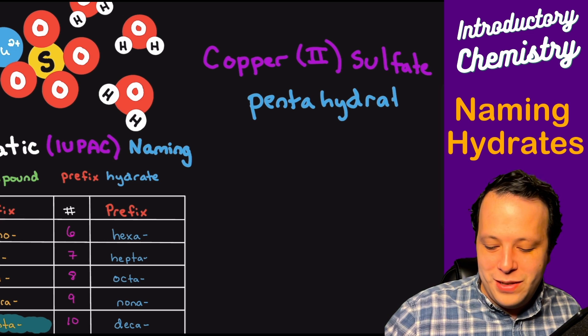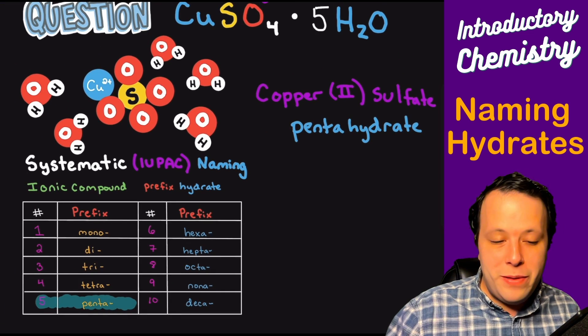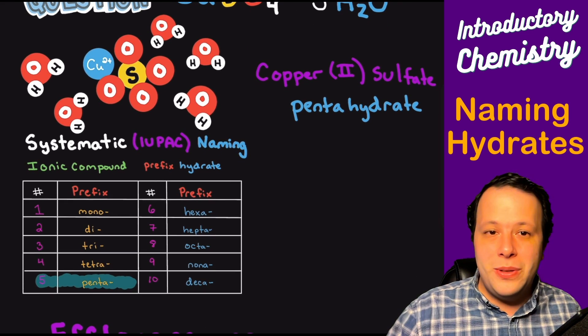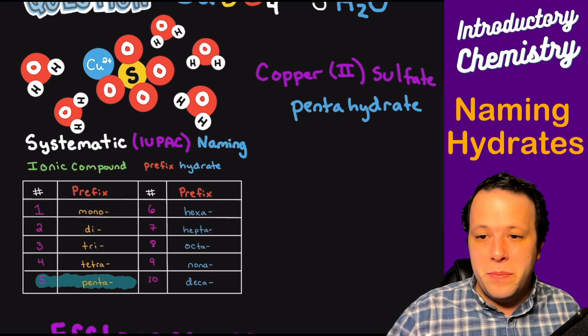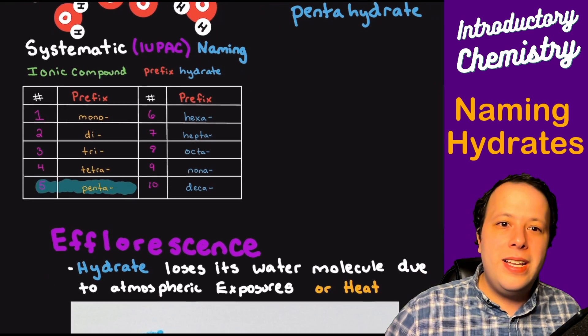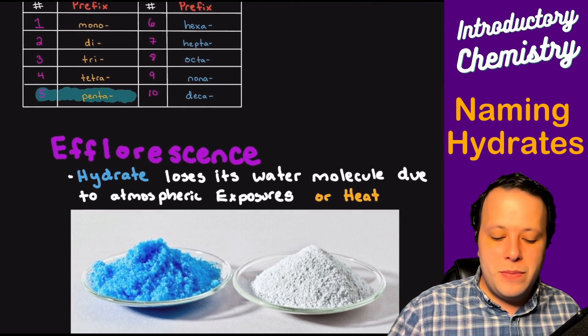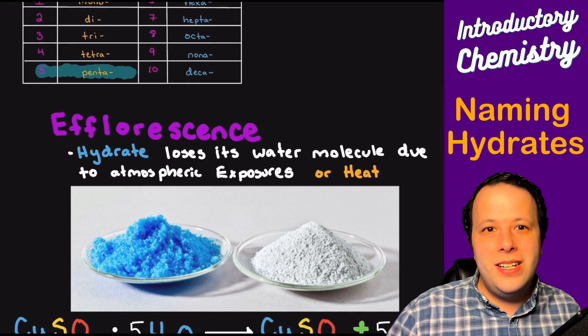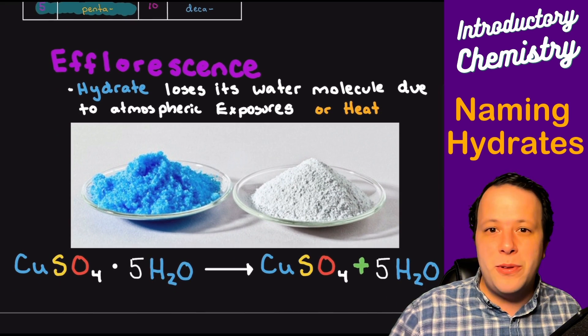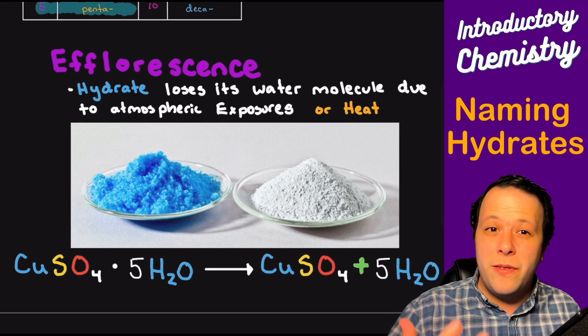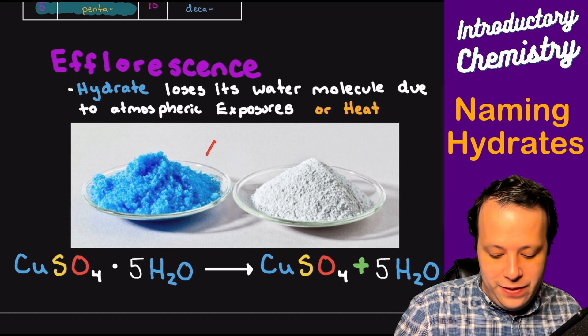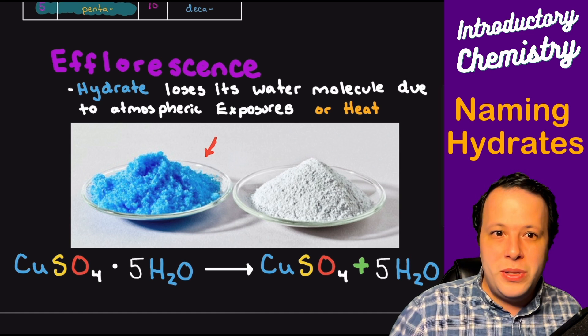Now with this particular molecule, with many of the different hydrates, something about them is that we are able to actually separate the water from it by either manipulating them or by natural processes. So one thing that can happen is this process known as efflorescence, which is when a hydrate loses its water due to it being exposed to certain things in the atmosphere or if you heat it up.